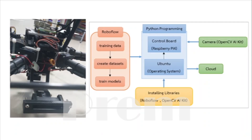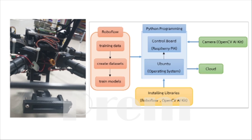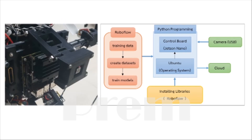Next is designing a program to detect objects or wildlife that encroaches the surveillance area. The camera set is used to detect objects or wildlife encroaching on the surveillance area. The detection part uses the RoboFlow platform to train data.